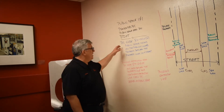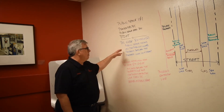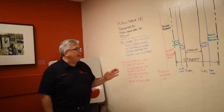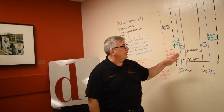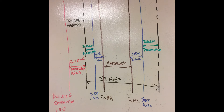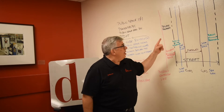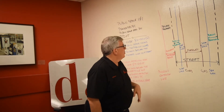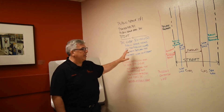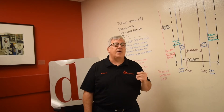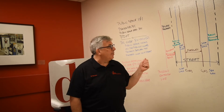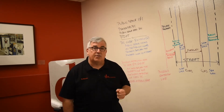Public space is defined in DC code as the publicly owned property between the property lines on the streets of the District of Columbia. What that really means is that when you take the area from one property line to another, shown in our diagram using a double dashed line, which is very typical for site plans, the area between one property line and another is the street. So the street is actually a definition of public space from property line to property line. It's a very functional and multifaceted use of land. It represents the most valuable asset owned by the citizens of the District of Columbia.